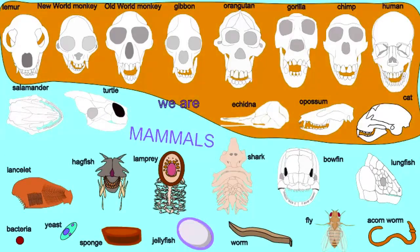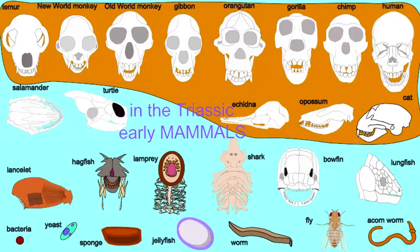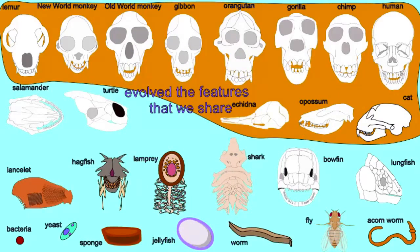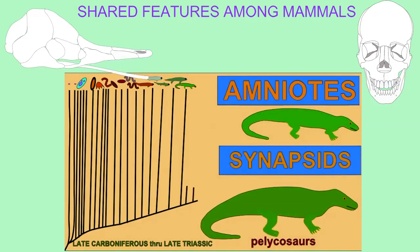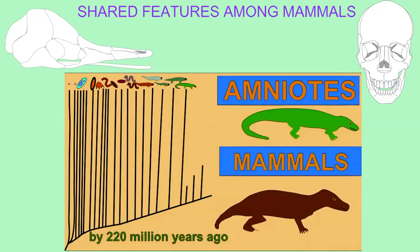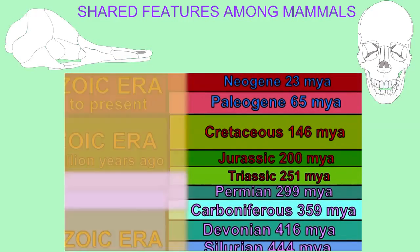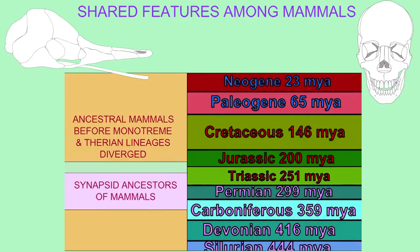We are mammals, descended from ancestral mammals. Mammals share so many features, whether they be human beings or egg-laying monotremes, and the reason they share so many features is because the time period over which their common ancestry evolved these features is well over 100 million years.